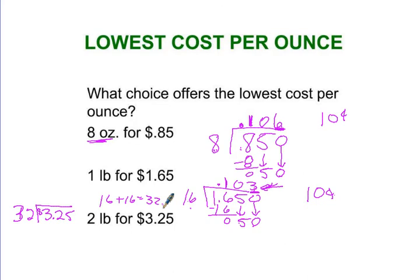Okay, and then we're going to do 32 goes into 32 one time. That's 32. Bring down the 5. How many times is 32 going to 5? 0.